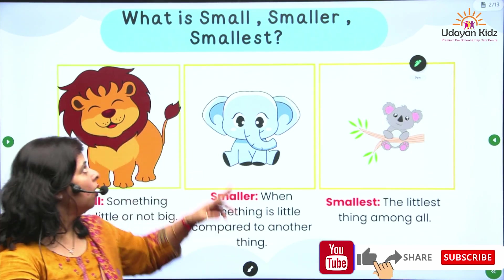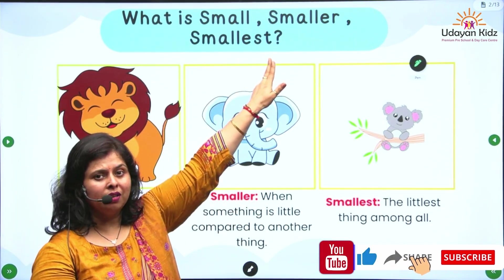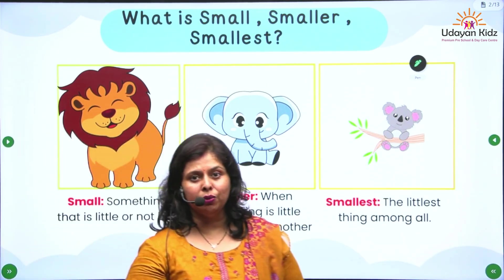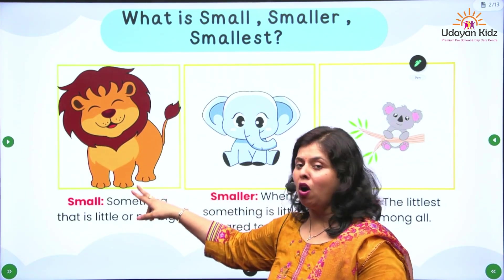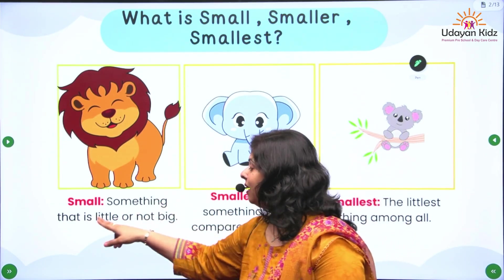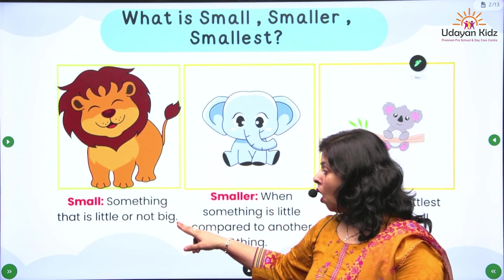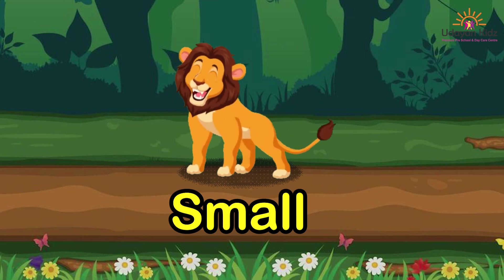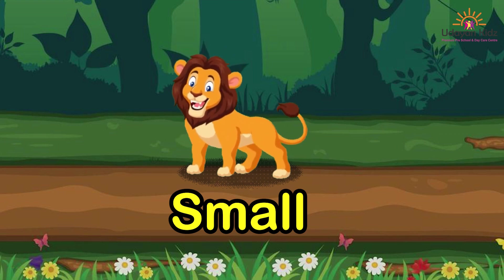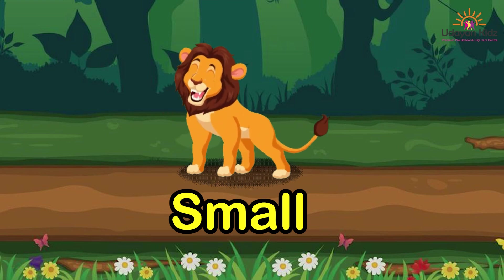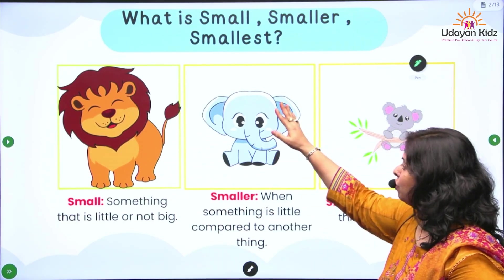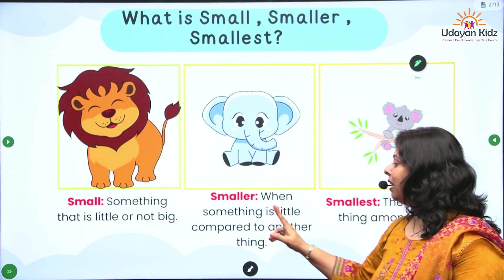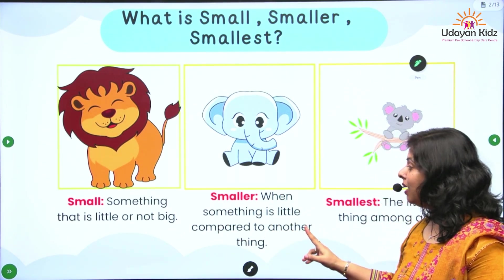Okay children, what is small, smaller, smallest? Let me tell you. This is small — something that is little or not big. Next, smaller — when something is little compared to another thing.